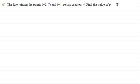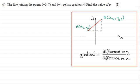Okay, welcome back. The answer to this problem is that p equals minus one. If you're unsure of this, you've just got to be familiar with what gradient is defined as — it's the difference in the y coordinates divided by the difference in the x coordinates.